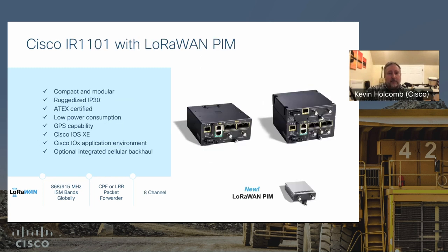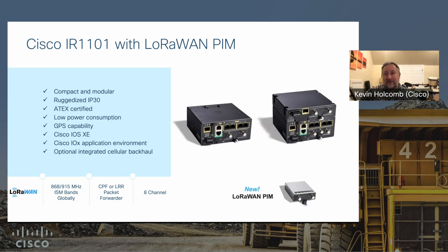The 1101 PIM — the pluggable module — plugs directly into the IR 1101. The 1101 also has a family of cellular modules, so you can do cellular backhaul from the same device, plug in the LoRaWAN module to get LoRaWAN coverage, and even host small applications on it — all in one box. It's fully rugged, DIN rail mount, typically installed inside a cabinet with the antenna outside.